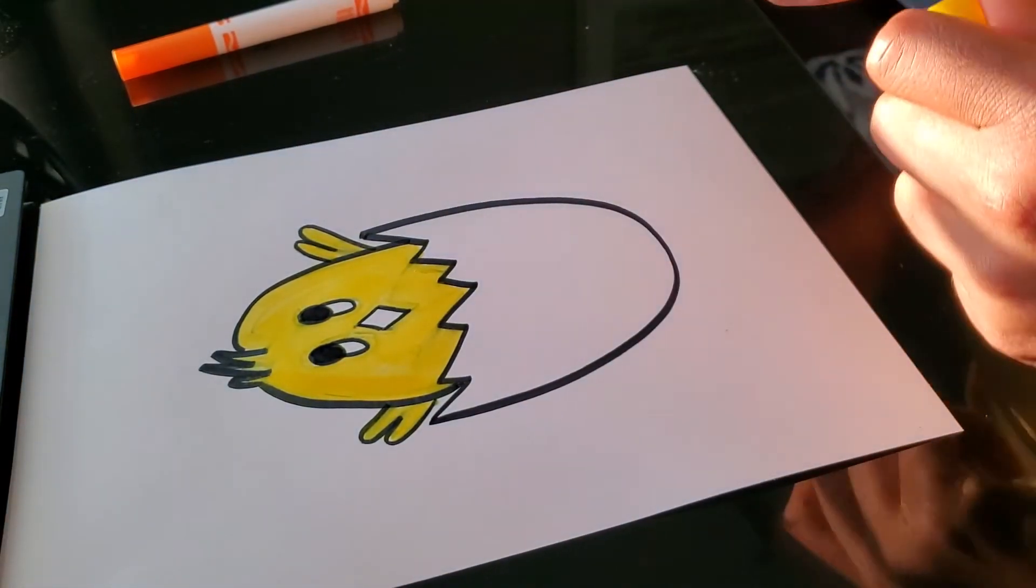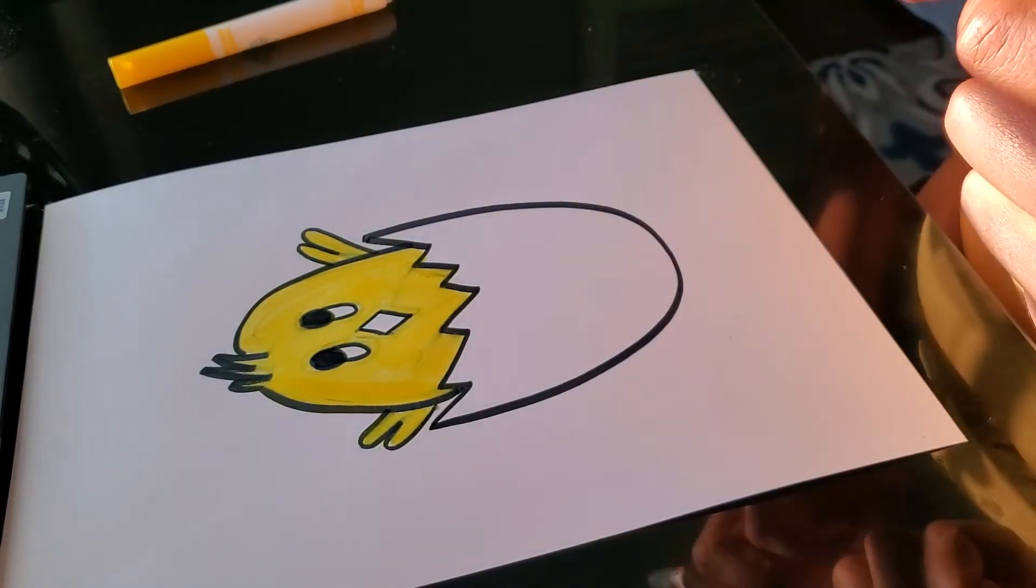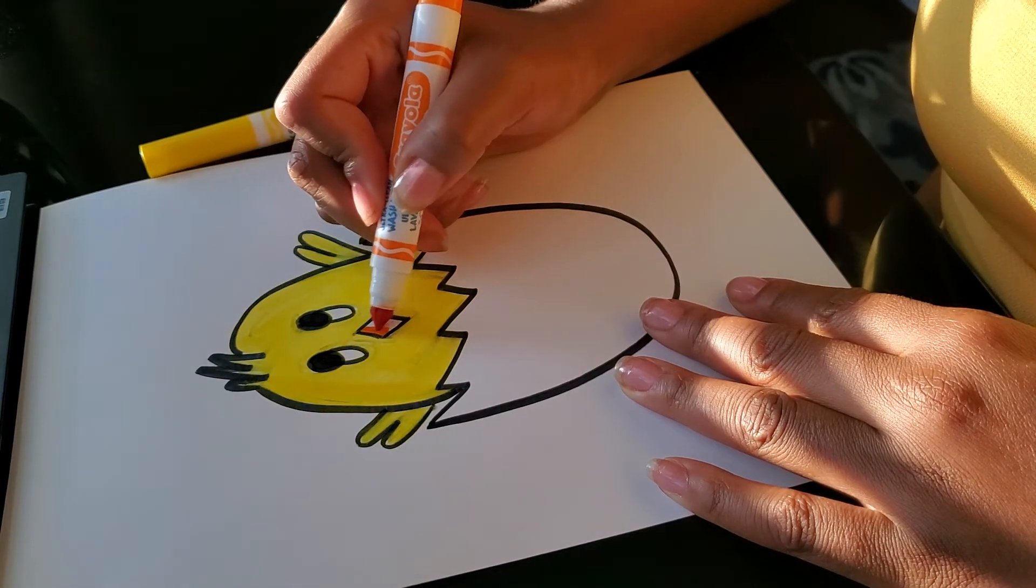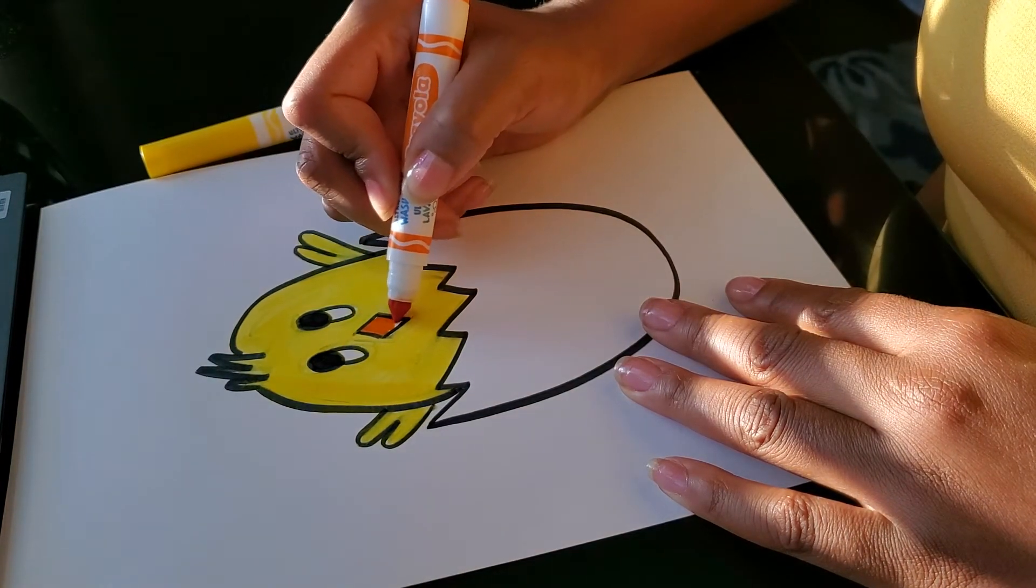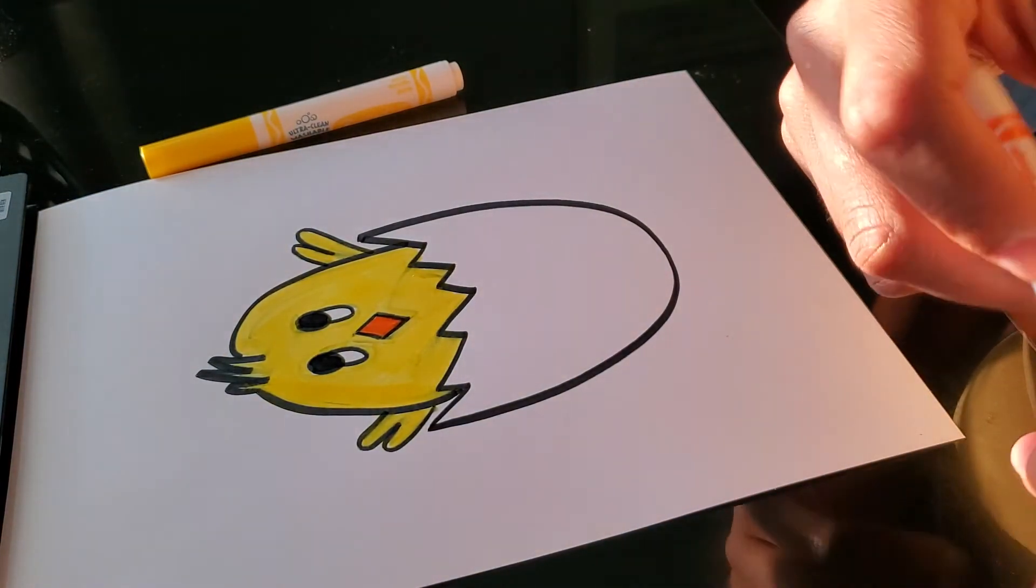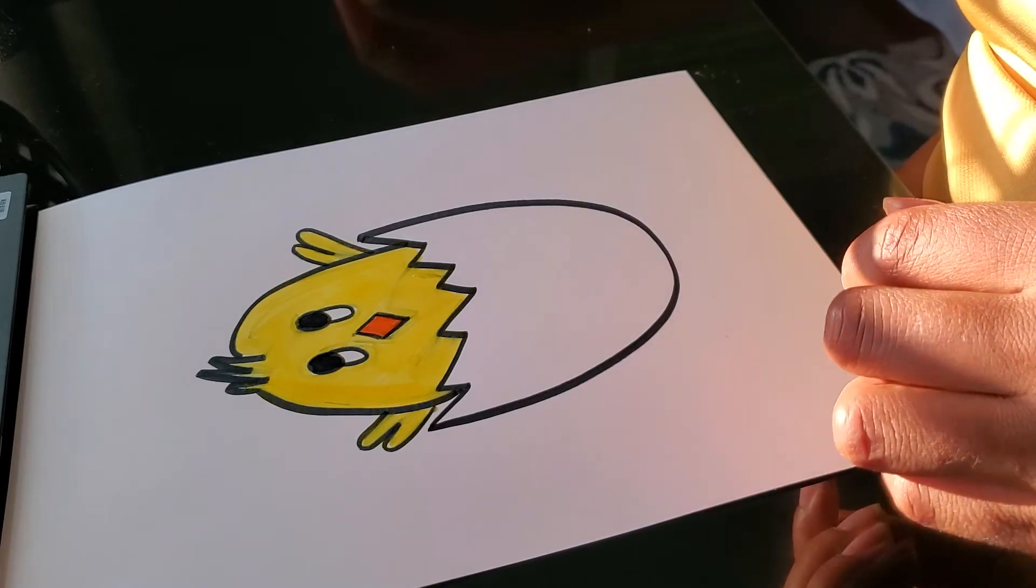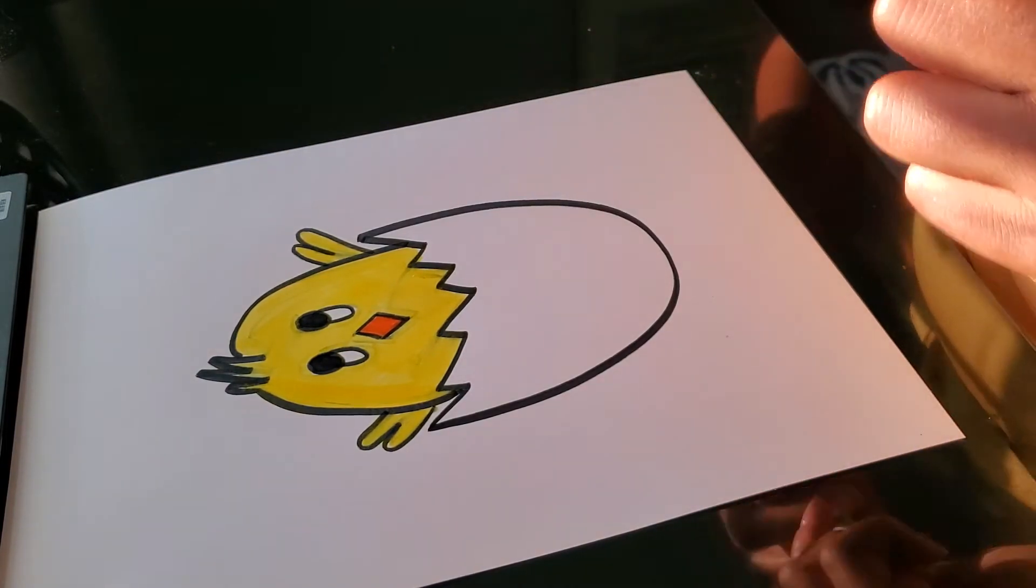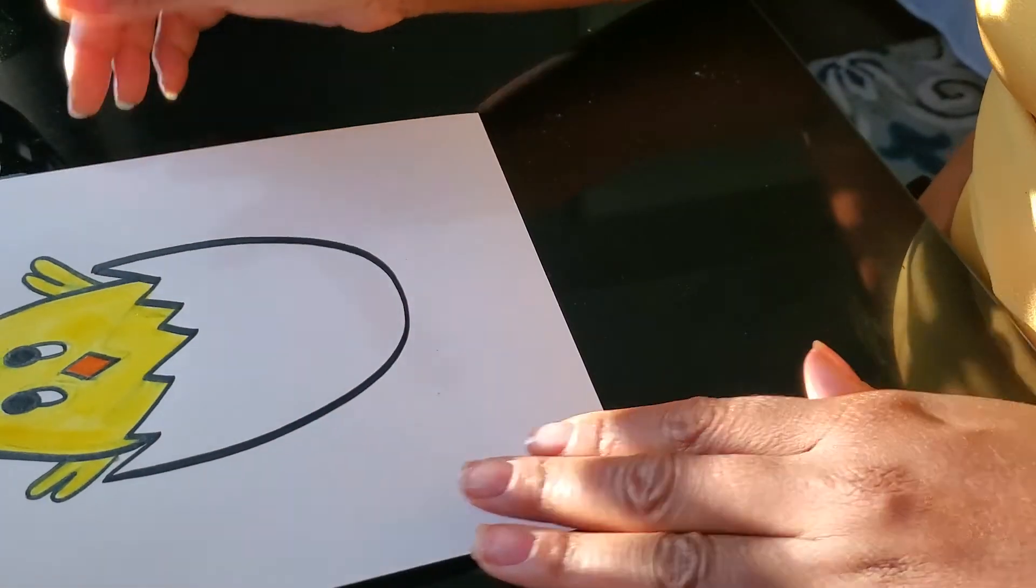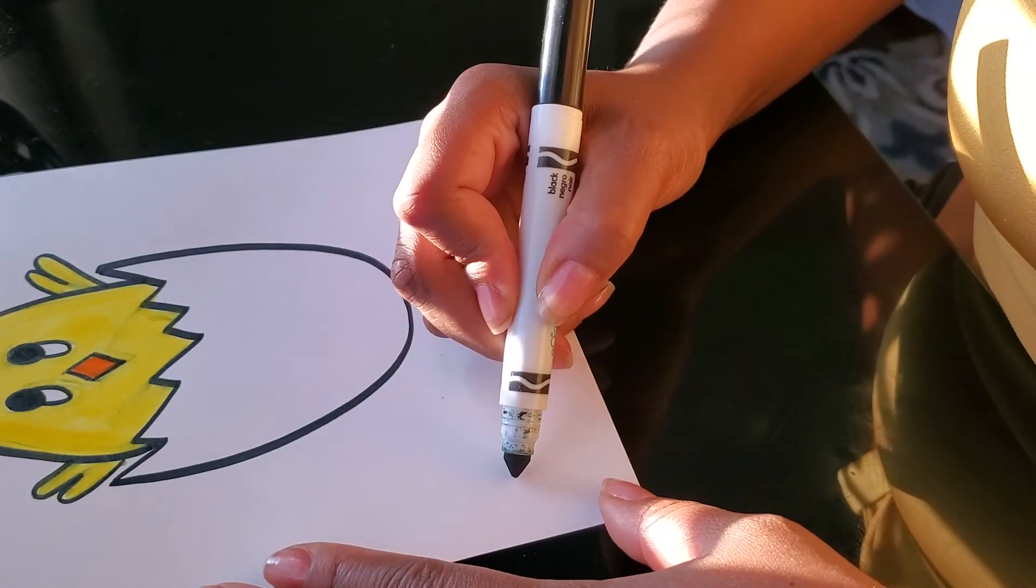Now let's color his nose orange, his beak, and that's it. You have your springtime chick, so you can write the word baby chick or springtime chick.